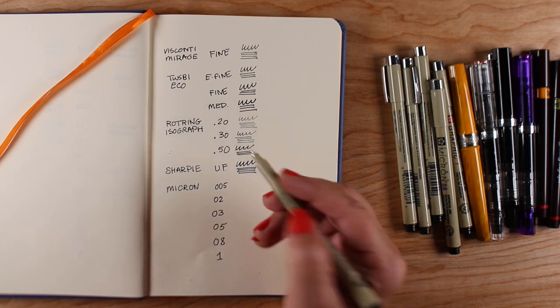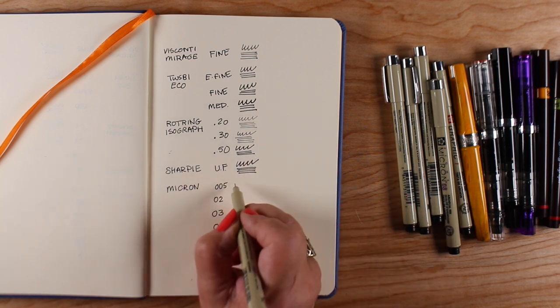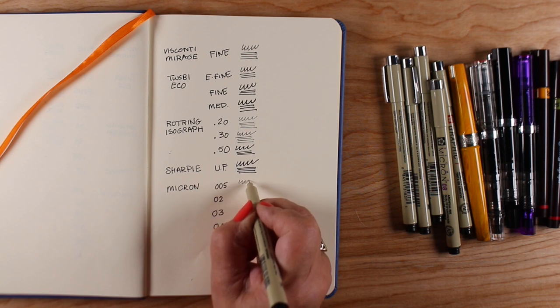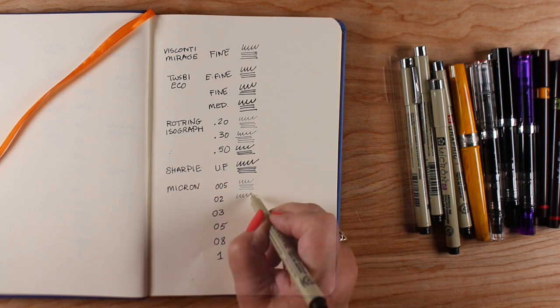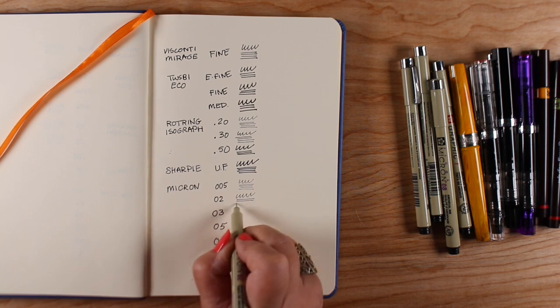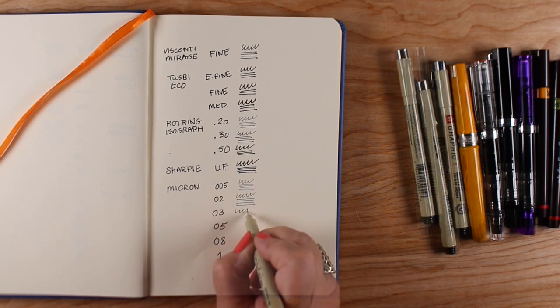But you can see the difference in how thick a sharpie is compared to that and then I'm going to run through a bunch of microns. Now the sharpie and the microns are not refillable and you can't replace nibs and things on those but they're more affordable.